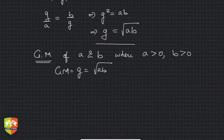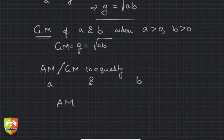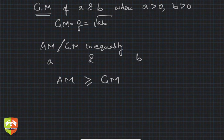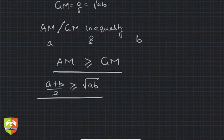There is a very famous inequality called the AM-GM inequality. If two numbers a and b are there, AM is always greater than or equal to GM — very important. Always remember this. The AM of any two positive numbers will always be greater than or equal to the GM of those two numbers. So (a + b)/2 is always greater than or equal to √(ab).